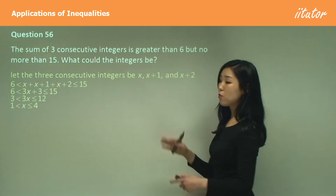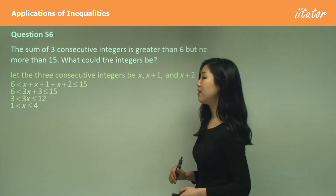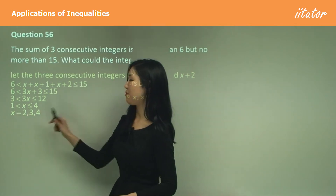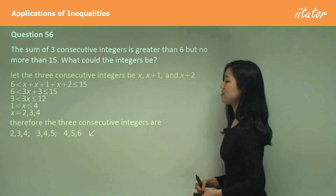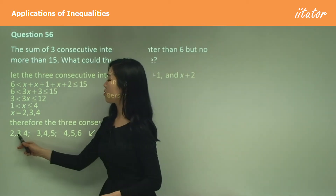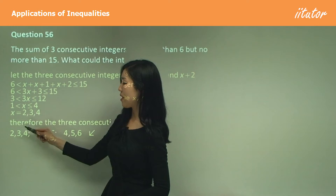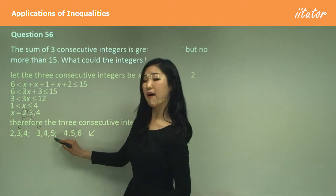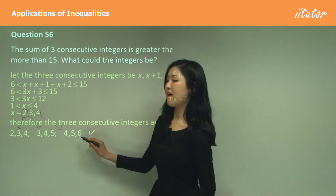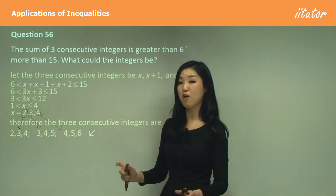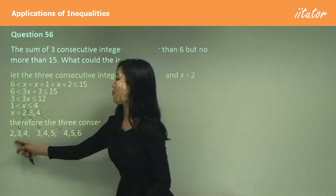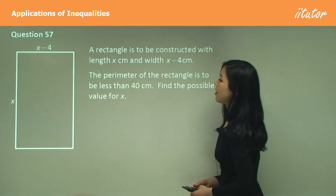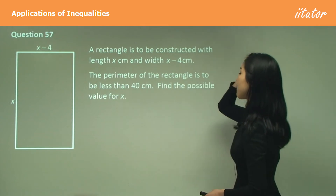The integers x can be 2, 3, or 4. So the three sets of consecutive integers are: 2, 3, 4 (when x=2); 3, 4, 5 (when x=3); or 4, 5, 6 (when x=4).